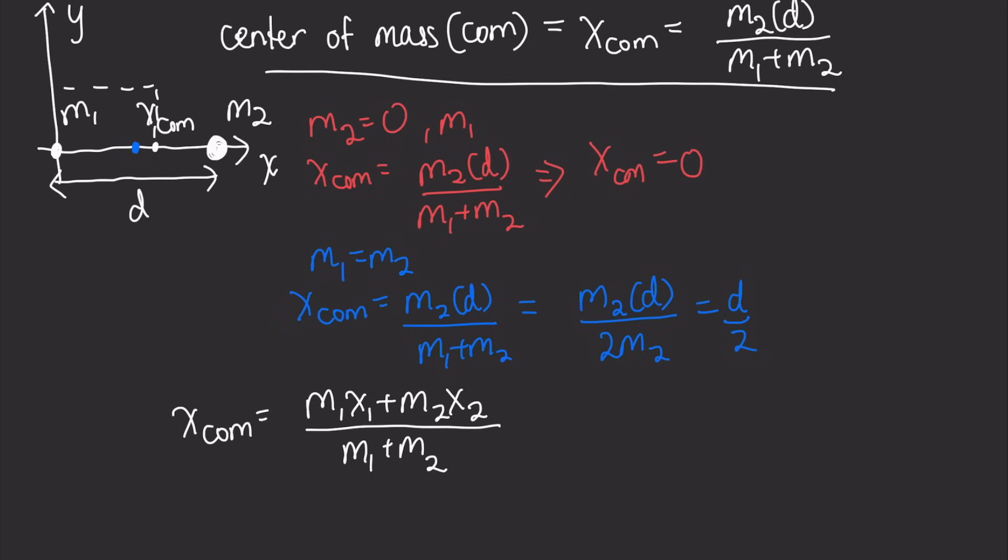So we can rewrite this equation as M1 times x1 plus M2 times x2 divided by M, where M is the total mass of both particles, M1 plus M2.